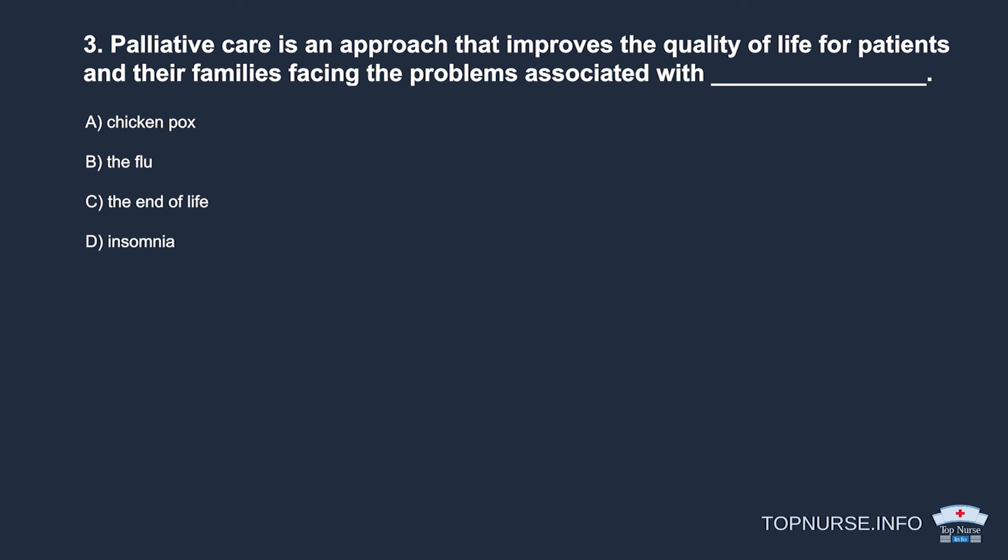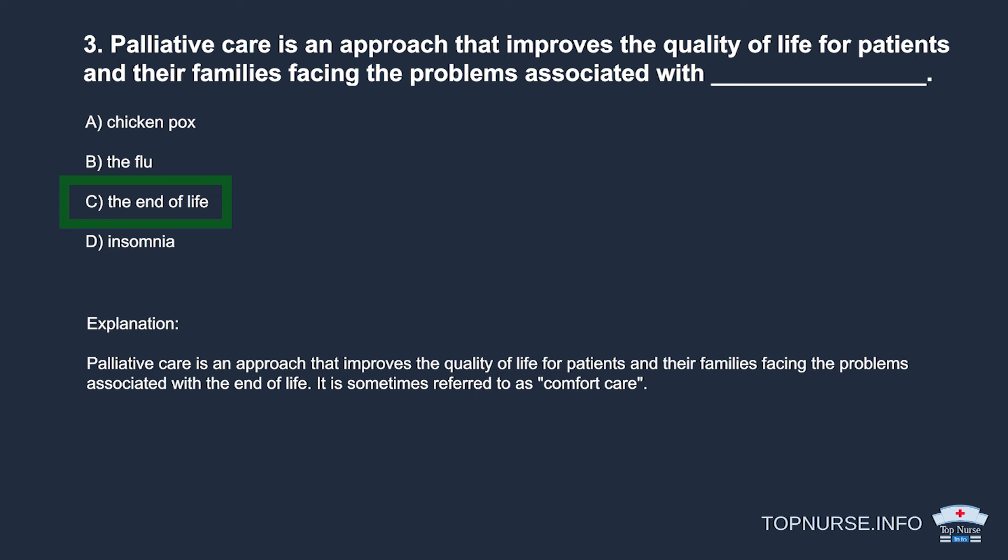Question 3: Palliative care is an approach that improves the quality of life for patients and their families facing the problems associated with: a. Chicken pox. b. The flu. c. The end of life. d. Insomnia. Correct answer: c. The end of life. Palliative care improves quality of life for patients and families facing end-of-life problems. It is sometimes referred to as comfort care.